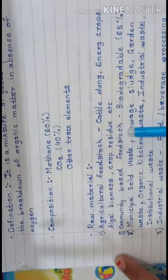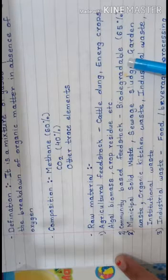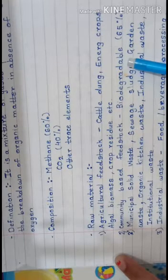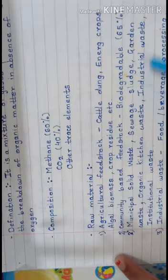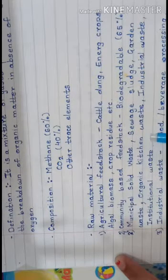Community-based feedstock, which is 65% biodegradable, contains municipal solid waste, sewage, sludge, garden waste, and organic kitchen waste.